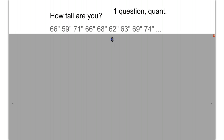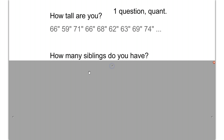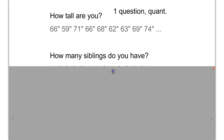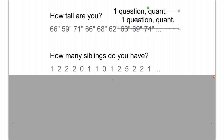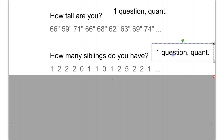If I ask you how many siblings you have, it's the same exact idea — you're going to answer with some number. I have zero, I have one, I have three, whatever it might be. You answer with a single number, and every person I ask is going to answer with a single number — that's how many siblings they have.